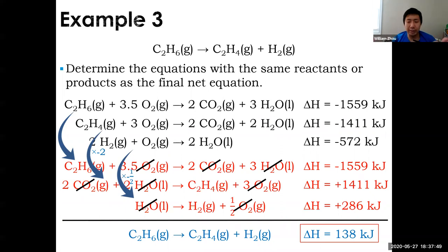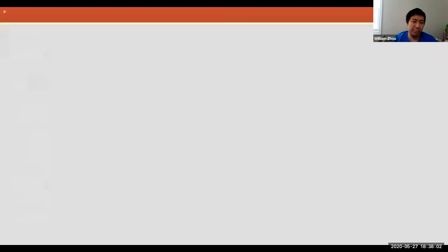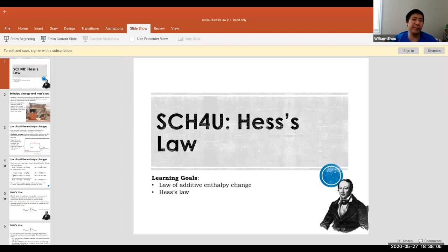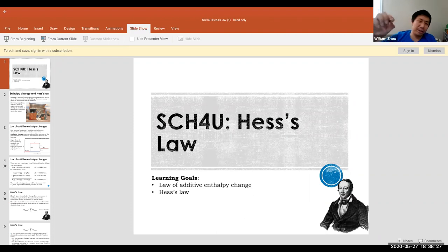That's the lesson on Hess's Law — how to add up individual steps to get the overall net change in enthalpy. This is not conceptually complicated, but it can be very tedious, especially when manipulating three equations, and it's easy to make arithmetic mistakes. So be very careful, calm down, take it slowly, and work toward the final answer carefully.